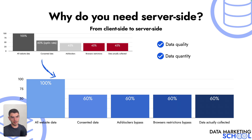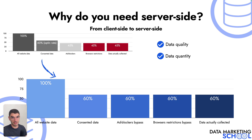The consented data is tied to the opt-in rate, which is 60% in this example. If you optimize your opt-in rate, you will have more data sent to your marketing platforms — but this is work you need to do on your cookie banner, which is more a client-side task. Server-side will allow you to bypass ad blockers and bypass browser restrictions, so the data actually collected will be 60% and won't be altered by browsers. The data quality and data quantity will be optimal.